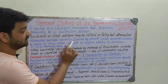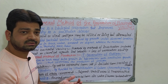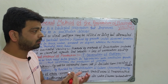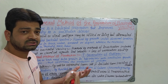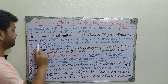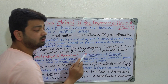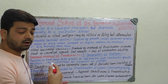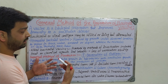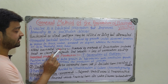Attenuated bacterial vaccines are achieved by growth under abnormal conditions — meaning we do not provide optimum or favorable conditions for bacterial growth. By growing bacteria under abnormal conditions, we reduce the virulence or weaken the microbes so they cannot generate disease symptoms when injected as a vaccine. Examples include the BCG vaccine, typhoid vaccine, MMR vaccine, and oral polio vaccine.